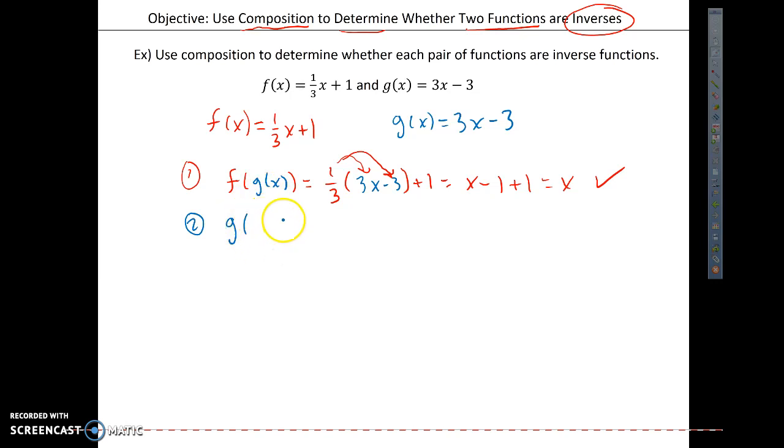So I have g of f of x. And let me switch over to my red pen, f of x. And what I want to do is write my g of x function 3 times. And now I'm going to stick f of x inside of g of x. One third x plus 1. And I'm going to subtract 3. So again, make sure you complete your g of x function here.